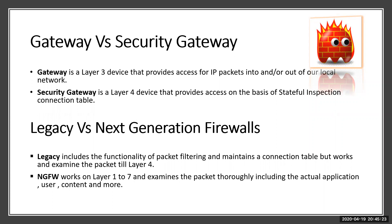What is a gateway and what is a security gateway, and how they differ from each other? A gateway is basically a layer 3 device that provides access for IP packets in and out of your local network. It examines and focuses on the packet from source to destination and what service it is requesting, and it allows it. It doesn't maintain any connection or session table. Whereas a security gateway works on layer 4, focuses on stateful inspection, and maintains a connection table where you can see the sessions created by the firewall — from which source it is receiving traffic, to which destination, and so on.